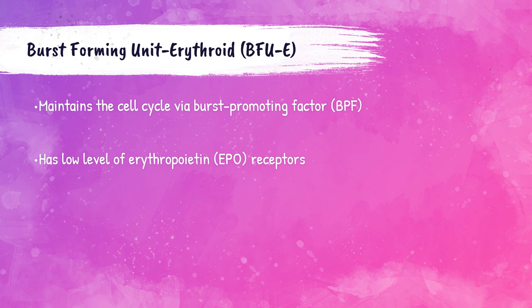The hematopoietic stem cell differentiates into a more committed erythroid progenitor by becoming a burst forming unit erythroid, also called a BFUE. BFUEs are the first progenitor cells committed solely to the erythroid lineage — they are the first cells that have decided they're going to become a red blood cell, or erythrocyte. BFUEs have a low level of receptors for EPO but do help to maintain the cell cycle.